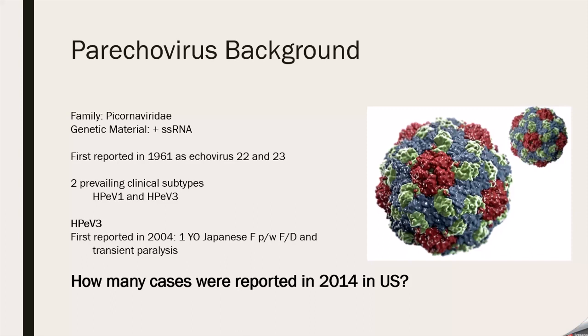For parechovirus 3, the first reported case was in 2014 — a one-year-old Japanese female who presented with fever and diarrhea and went on to develop transient paralysis.